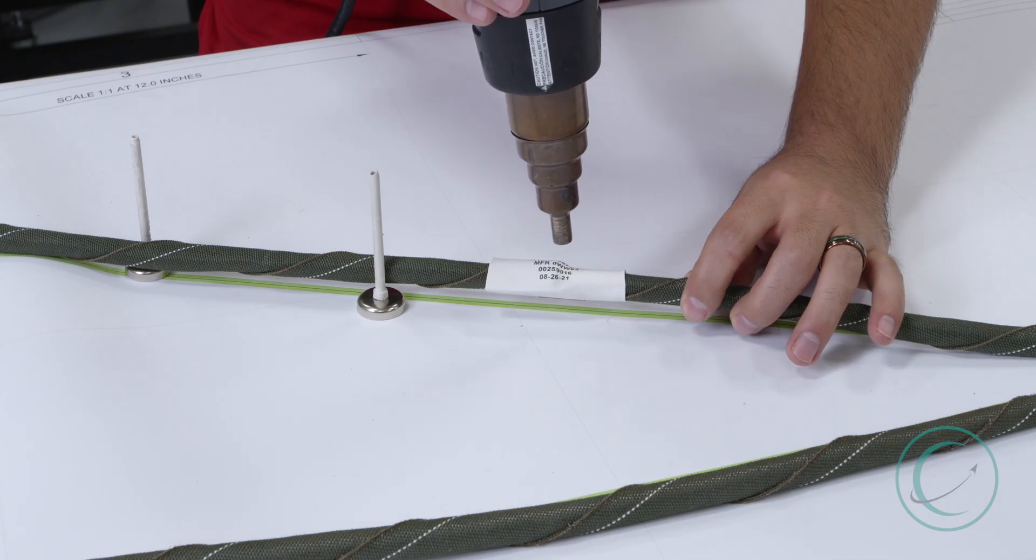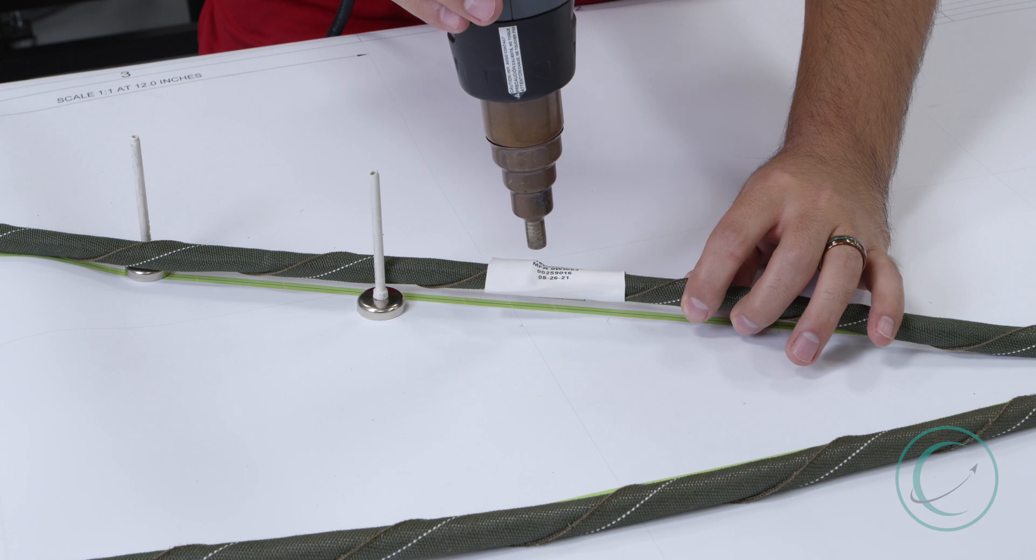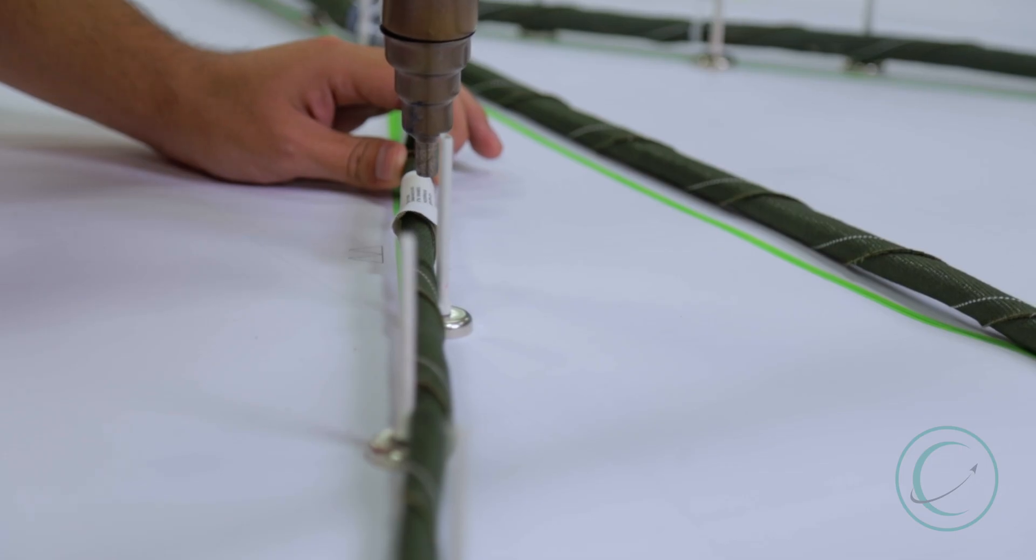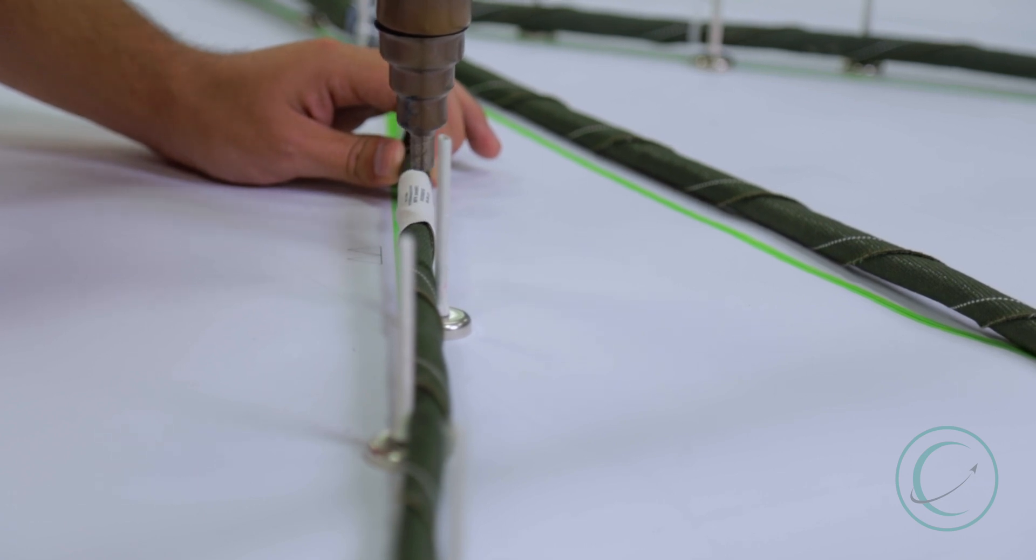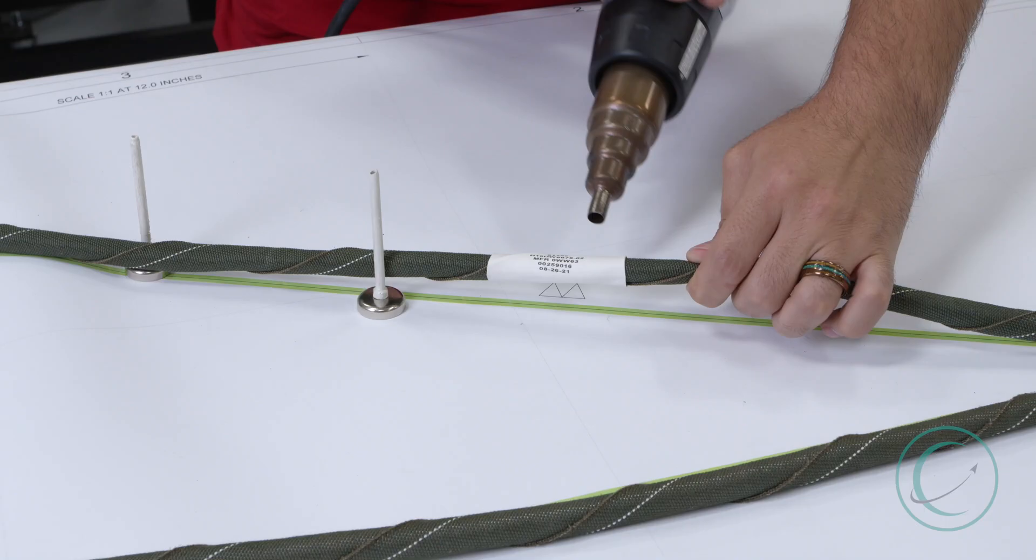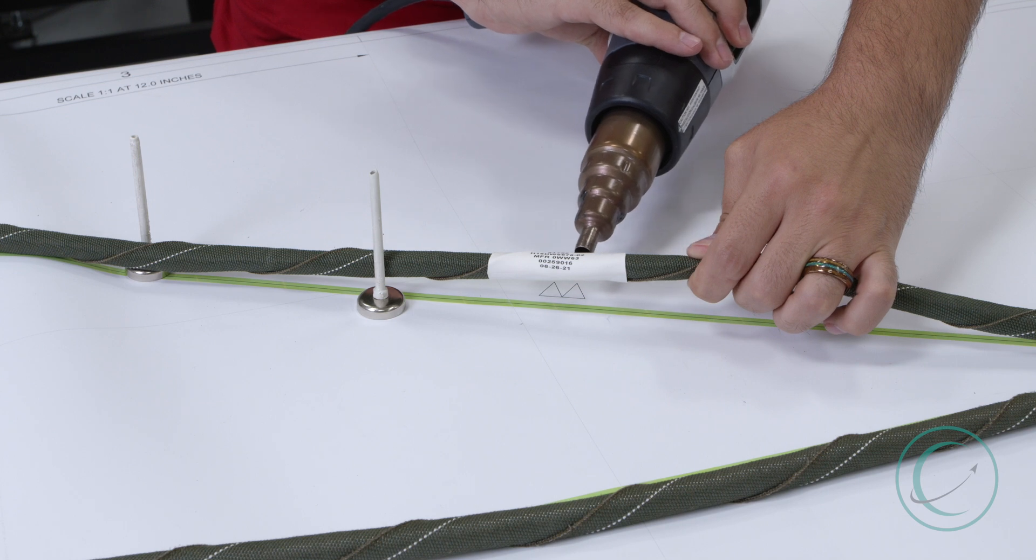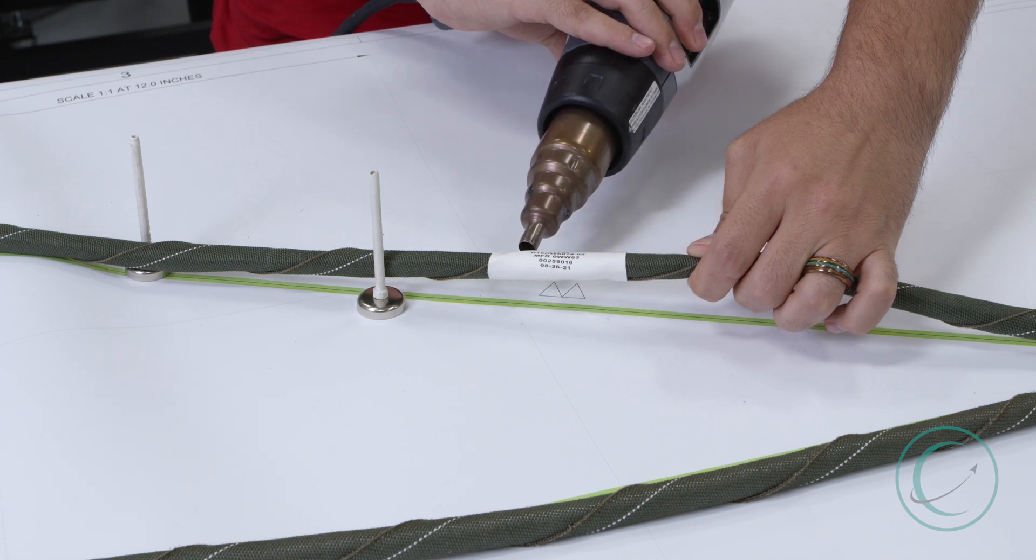You want to make sure not to touch the metal nozzle to the Repdesil or it could damage it. You also want to make sure the heat does not hit the prefabricated braid as it could burn it. Make sure to hit both sides to make sure that the tubing stays in place.